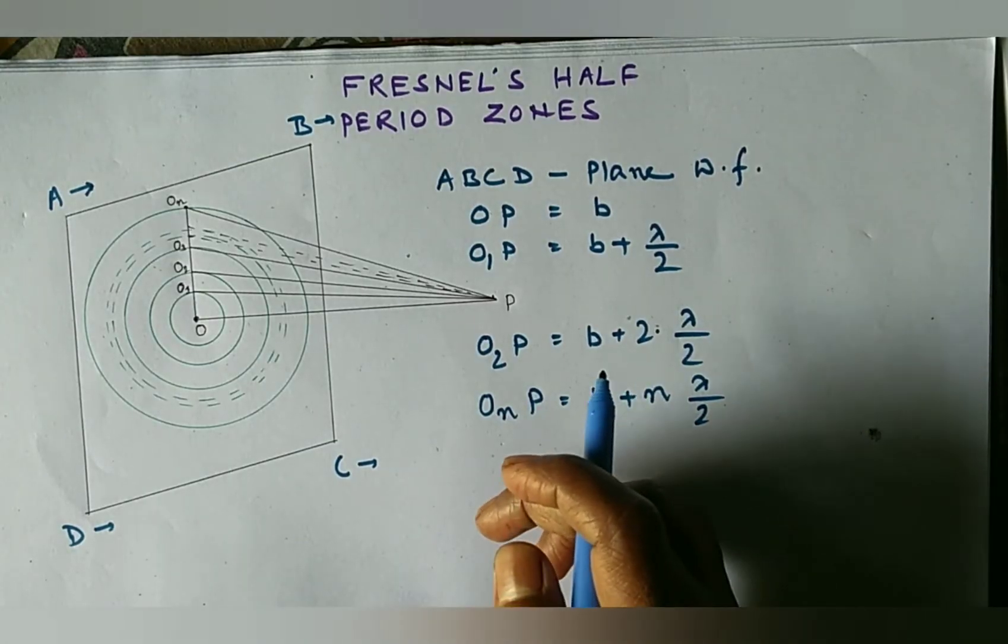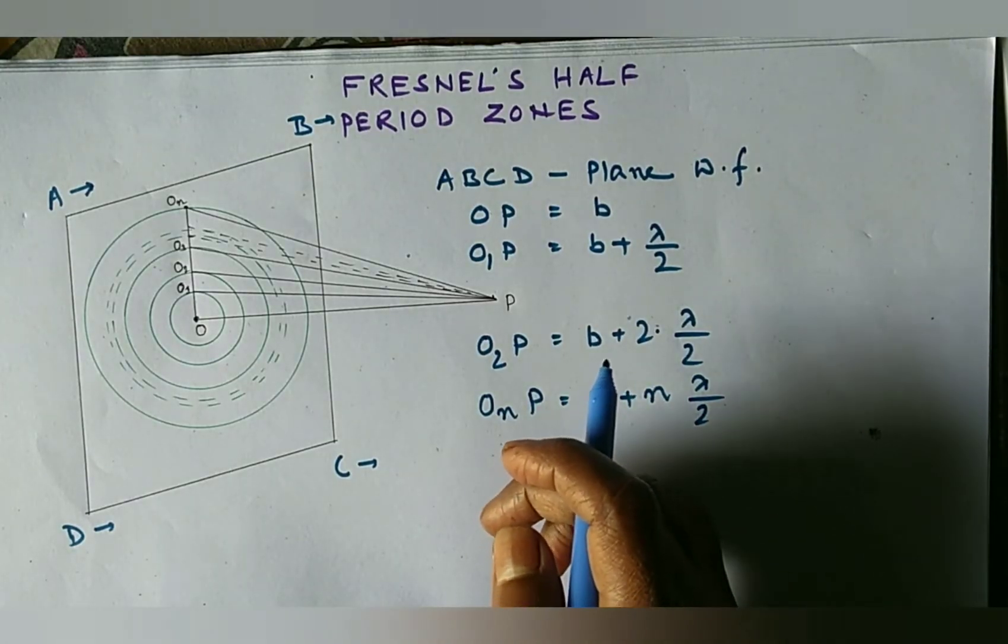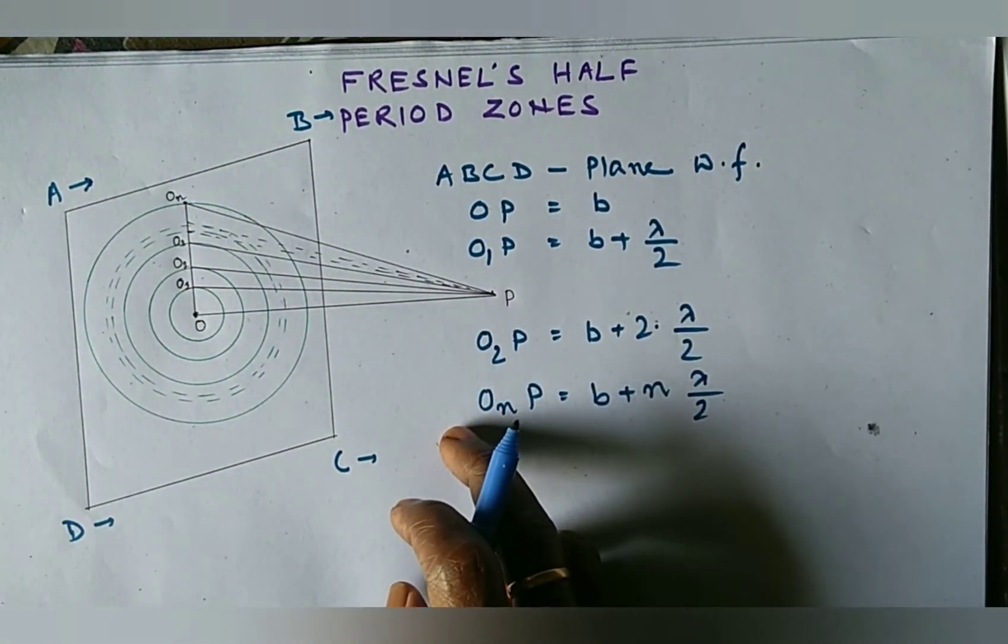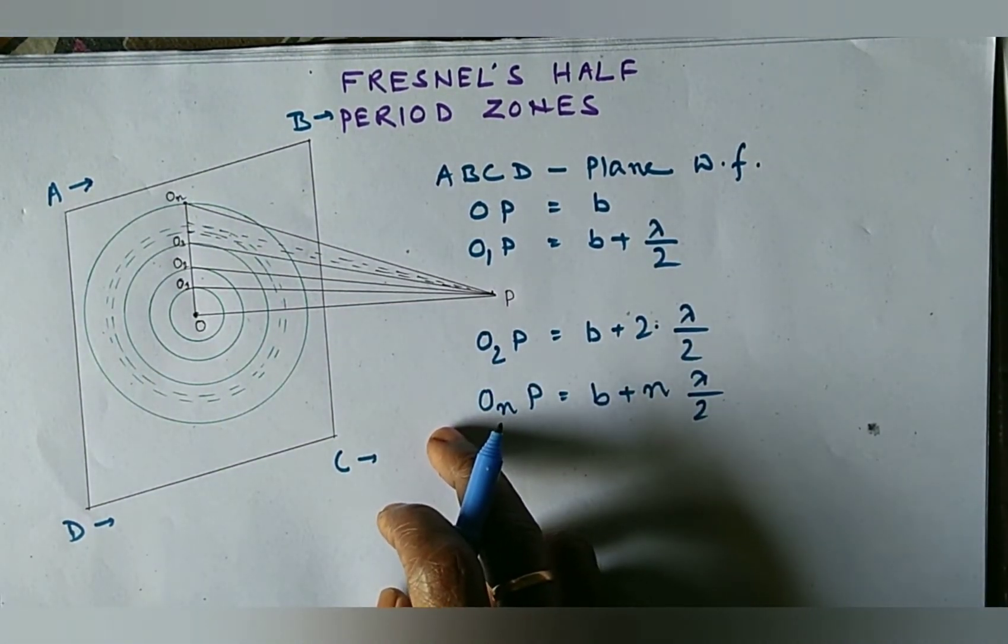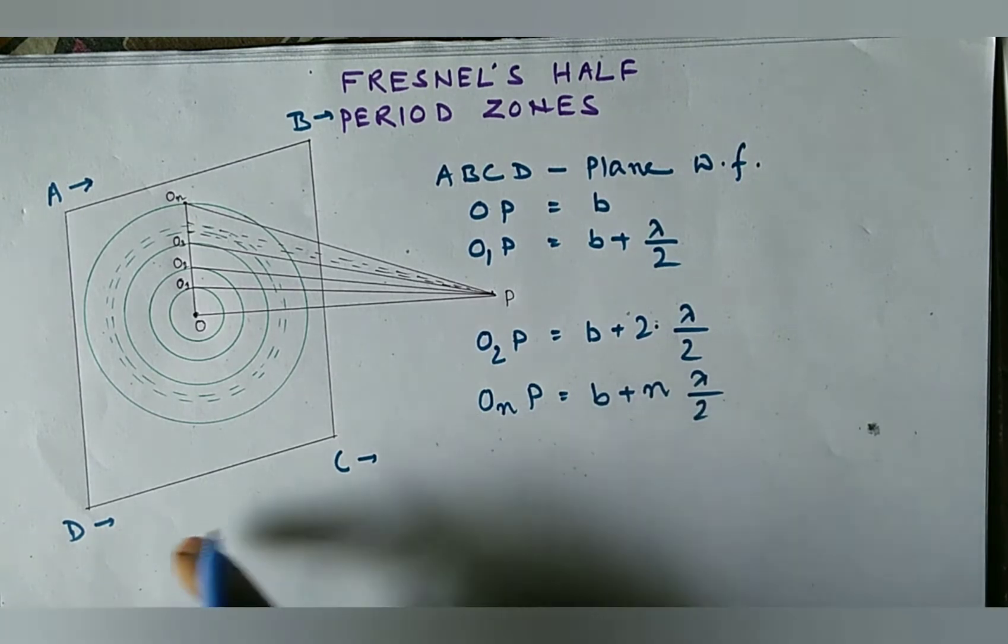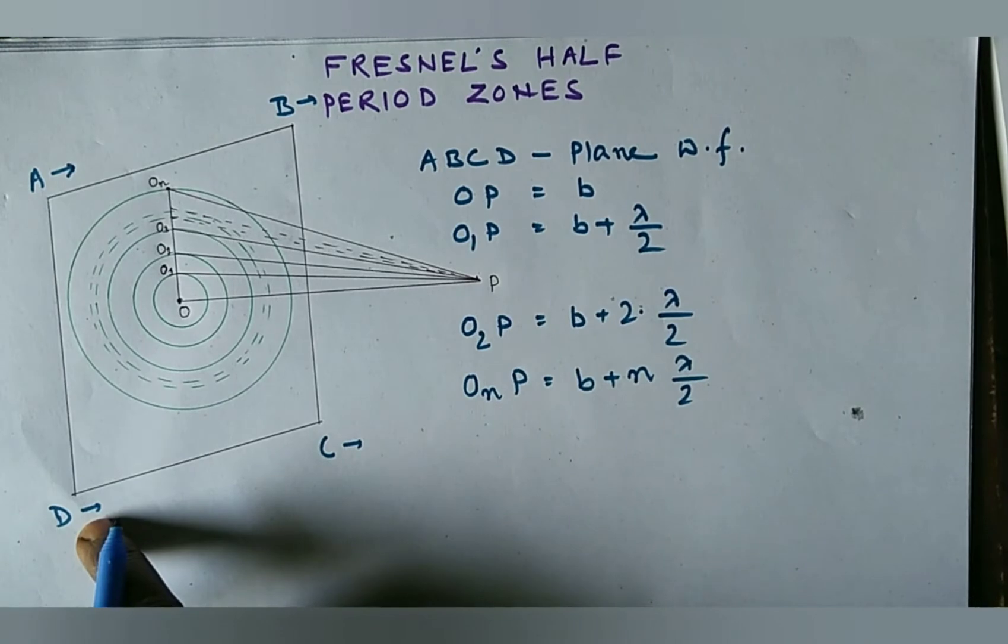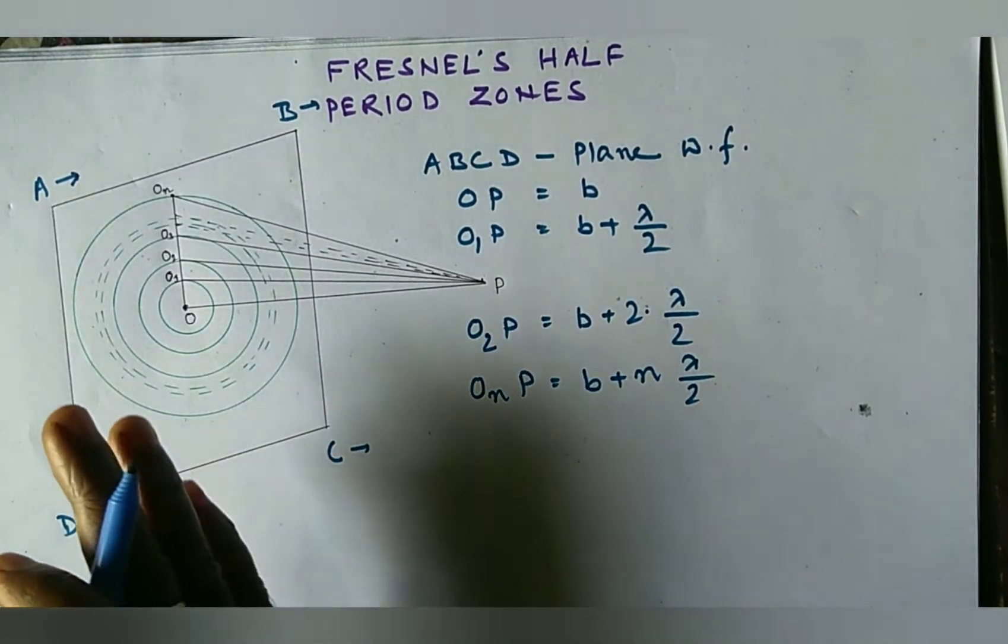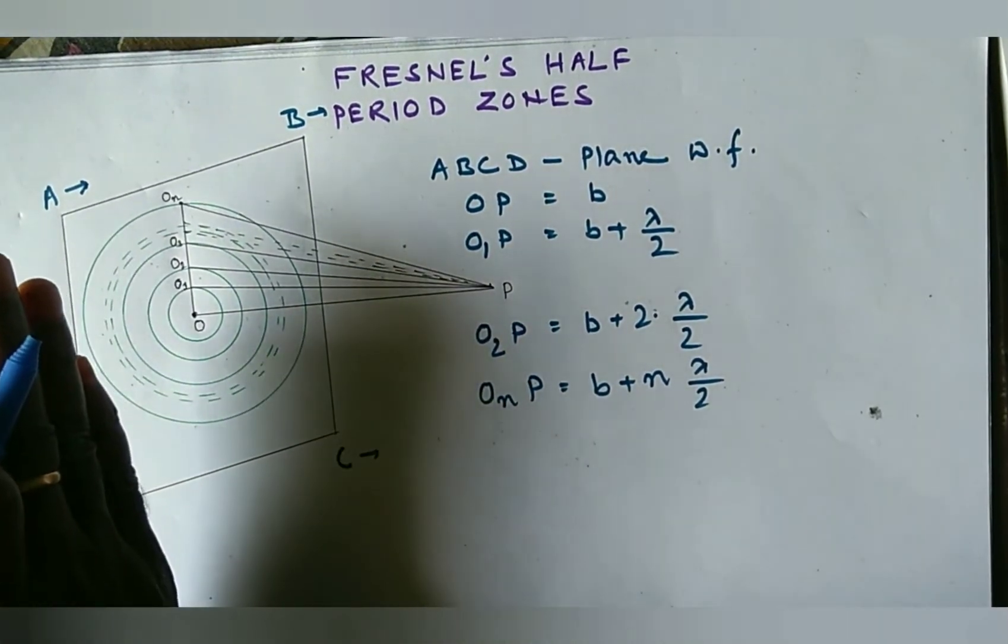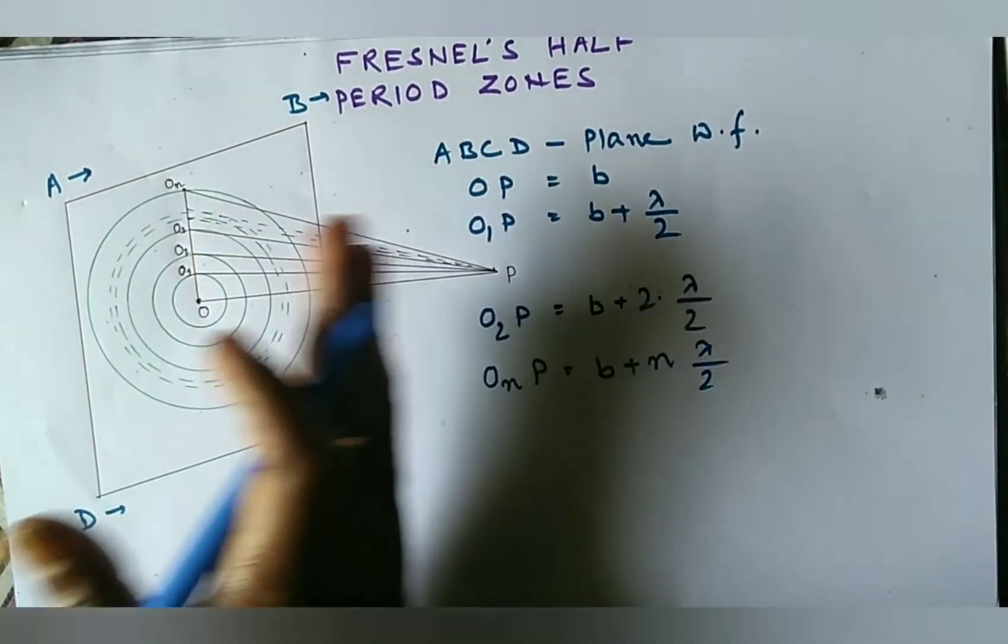What is Fresnel's half-period zones? To find the answer to this question, at first we consider a plane wavefront ABCD of wavelength lambda propagating in the right direction.